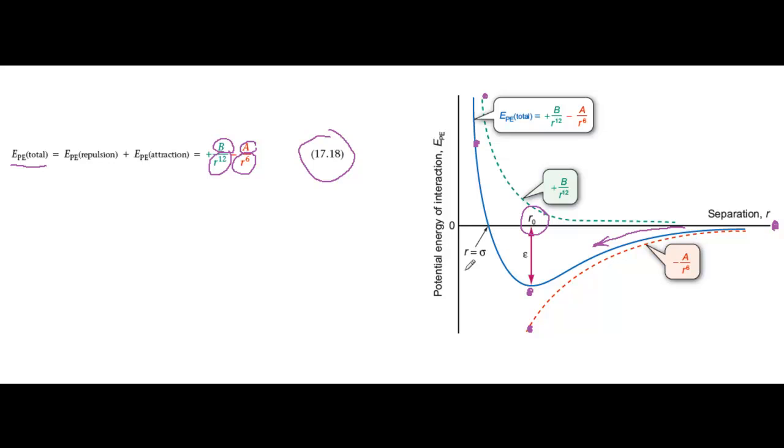Equation 17.18 is only an approximation, but it helps to give you an understanding of the way attraction and repulsion change with molecular separation.